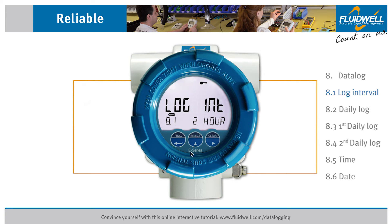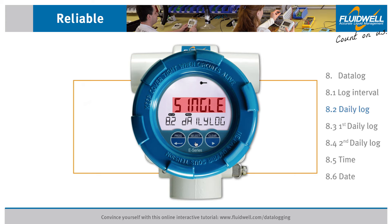Use Select to go to function 8.2, Daily Log. We will set the daily log to one time each day at 5 p.m. Press Prog to change the setting. With Select, we will select the single value. Press Prog to store this setting.